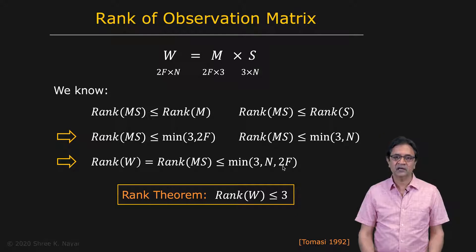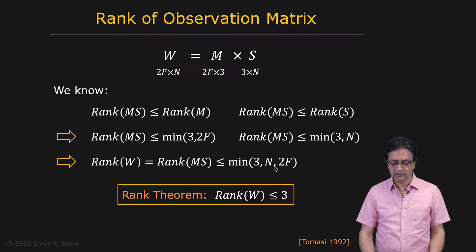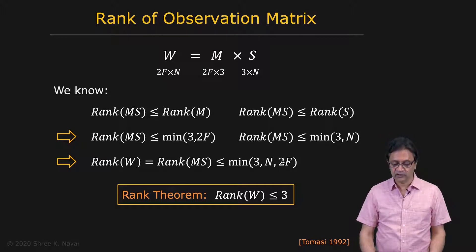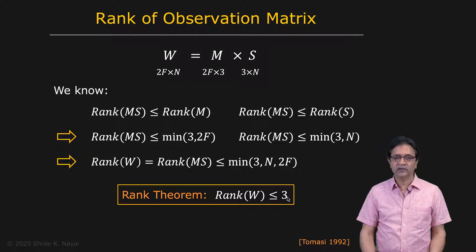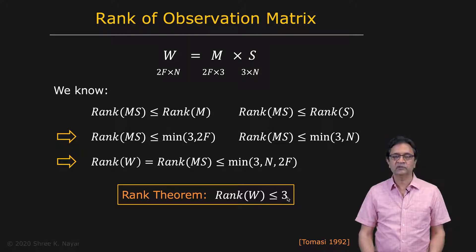We have lots of scene points we are interested in — N is a large number. We also have plenty of frames in our video — F is a large number. Therefore, we can safely say that the rank of the observation matrix W must be less than or equal to three. This is referred to as the rank theorem or the rank constraint.